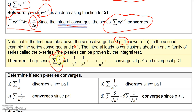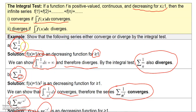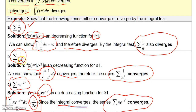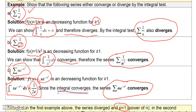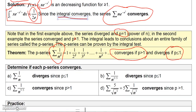Those examples can actually be solved with the p-series test. If you have a series of 1/n^p, then that series converges if p is greater than 1, and diverges if p is less than or equal to 1. If we'd had this theorem earlier, I could have looked at 1/n — power is 1, which is not greater than 1, so it diverges — and for 1/n², the power is 2 which is greater than 1, so it must converge. Both of those follow directly from the p-series test.